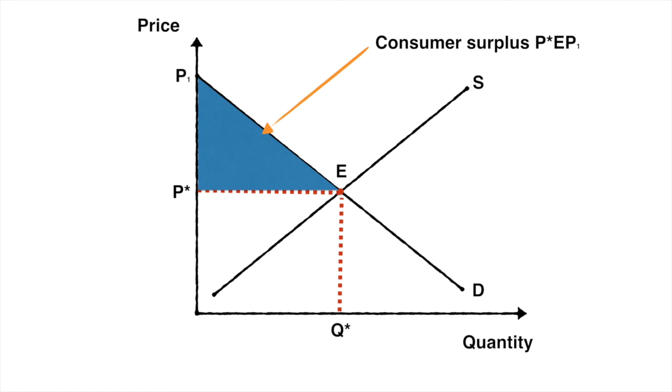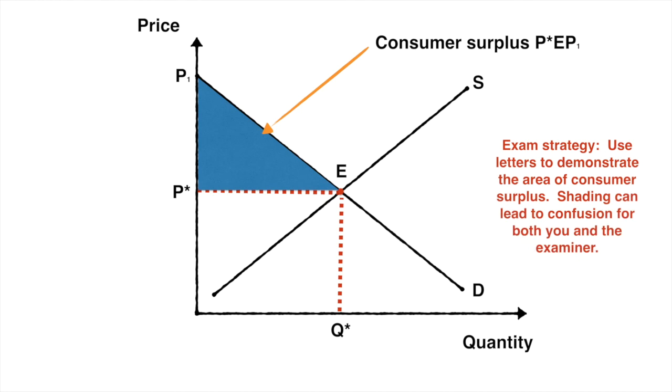I don't refer to it as the shaded area. I'm only doing that to highlight this for you. One thing I would like you to remember: in your exam use letters to demonstrate the area of consumer surplus. Shading can lead to confusion for both you and the examiner. This strategy will make more sense when we take a look at manipulating consumer surplus. But for now practice drawing this over and over and it will start to stick.